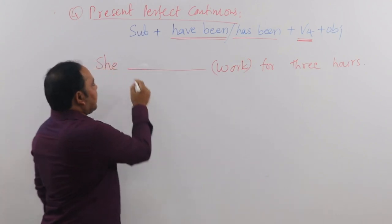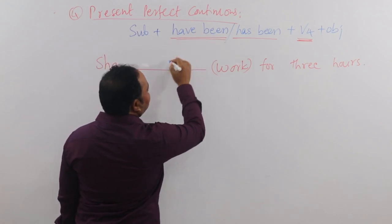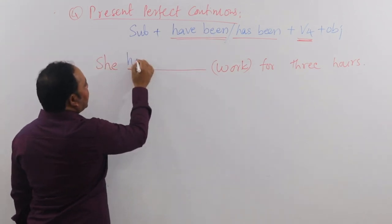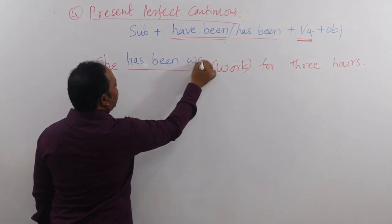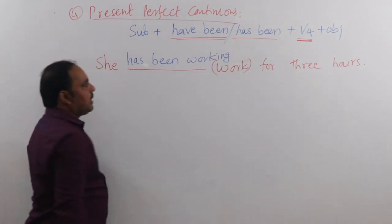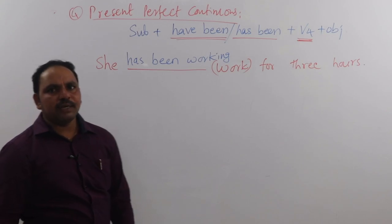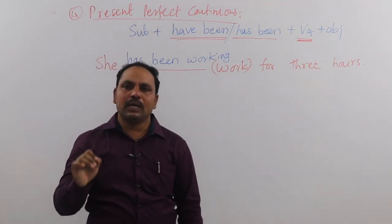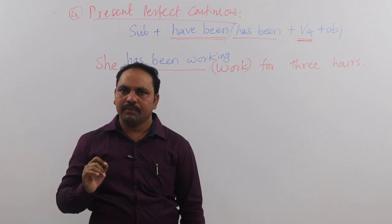For the example with 'she', we use has been (since she is singular). Therefore: she has been working. The full sentence is: 'She has been working for three hours.'